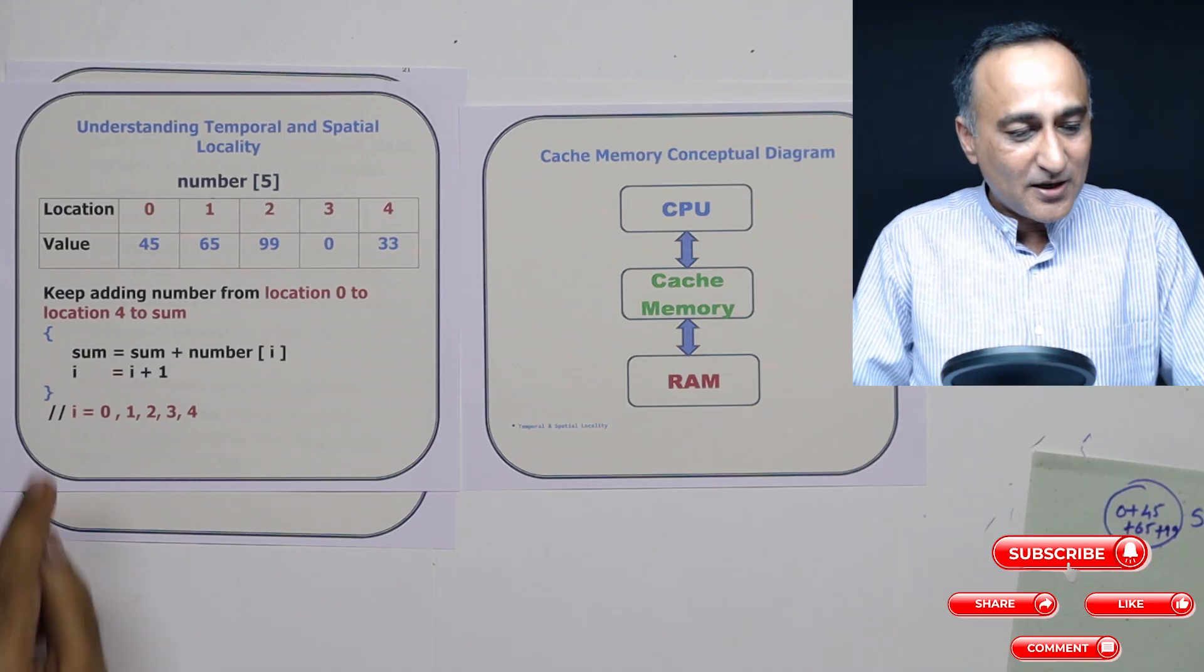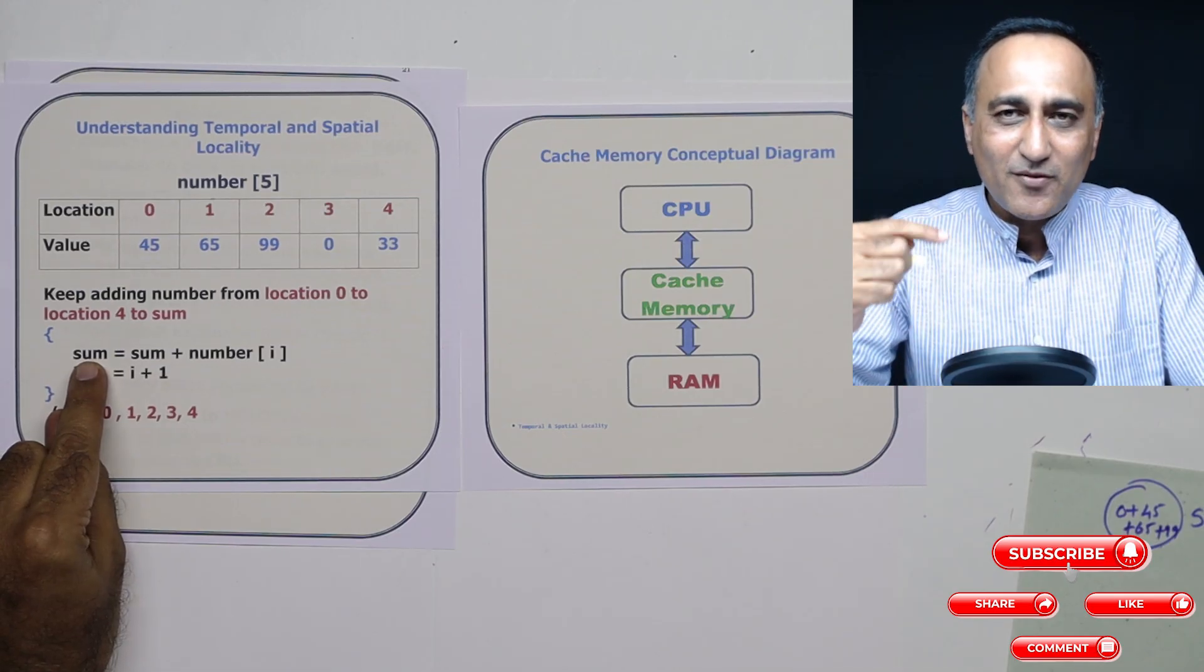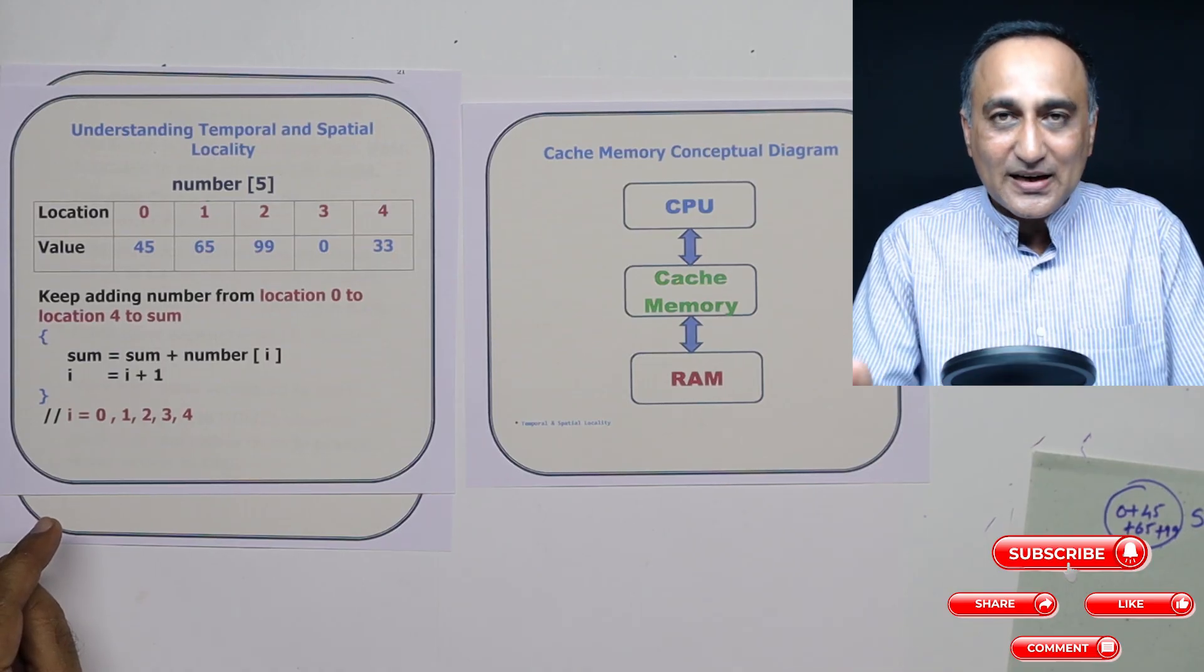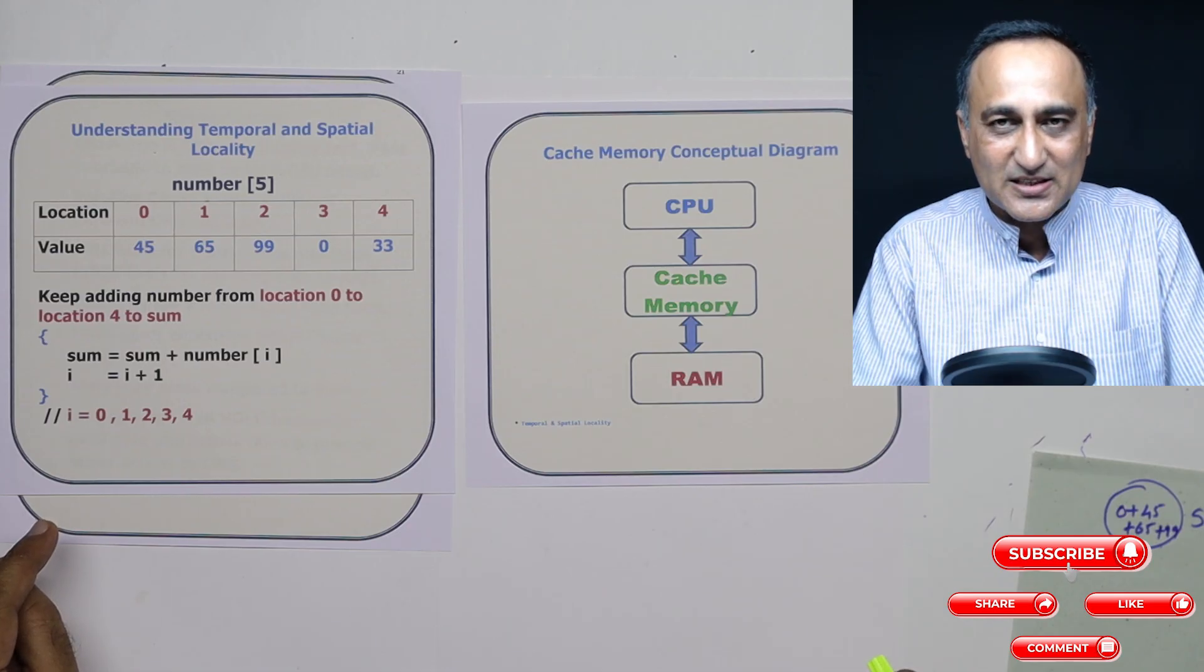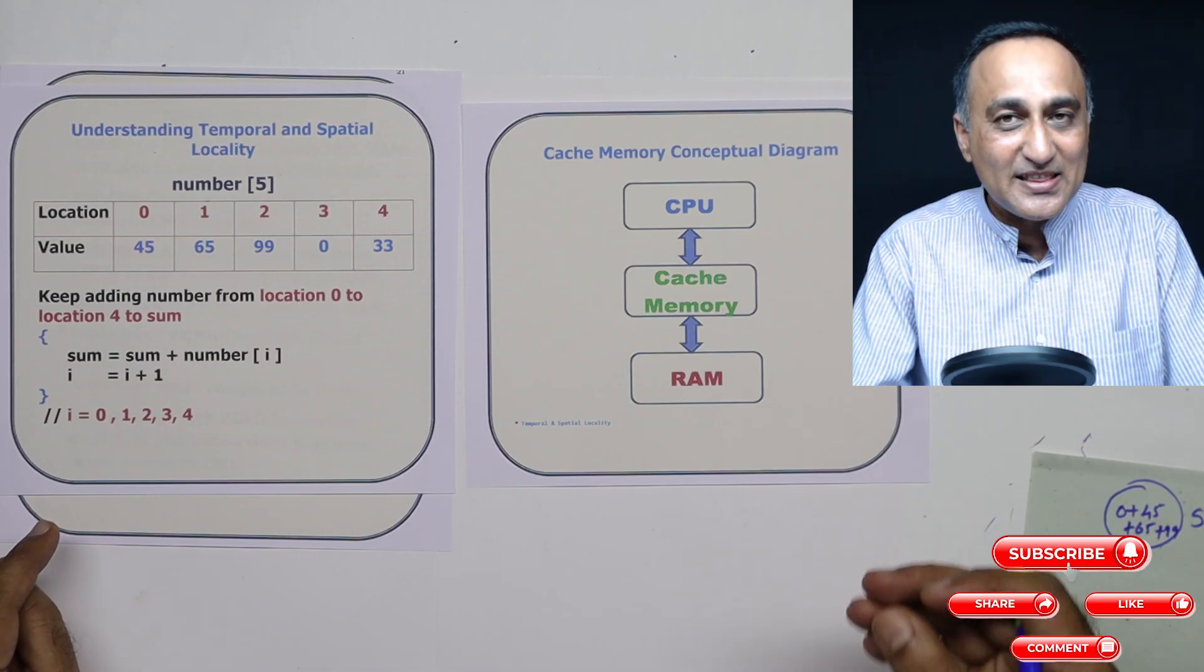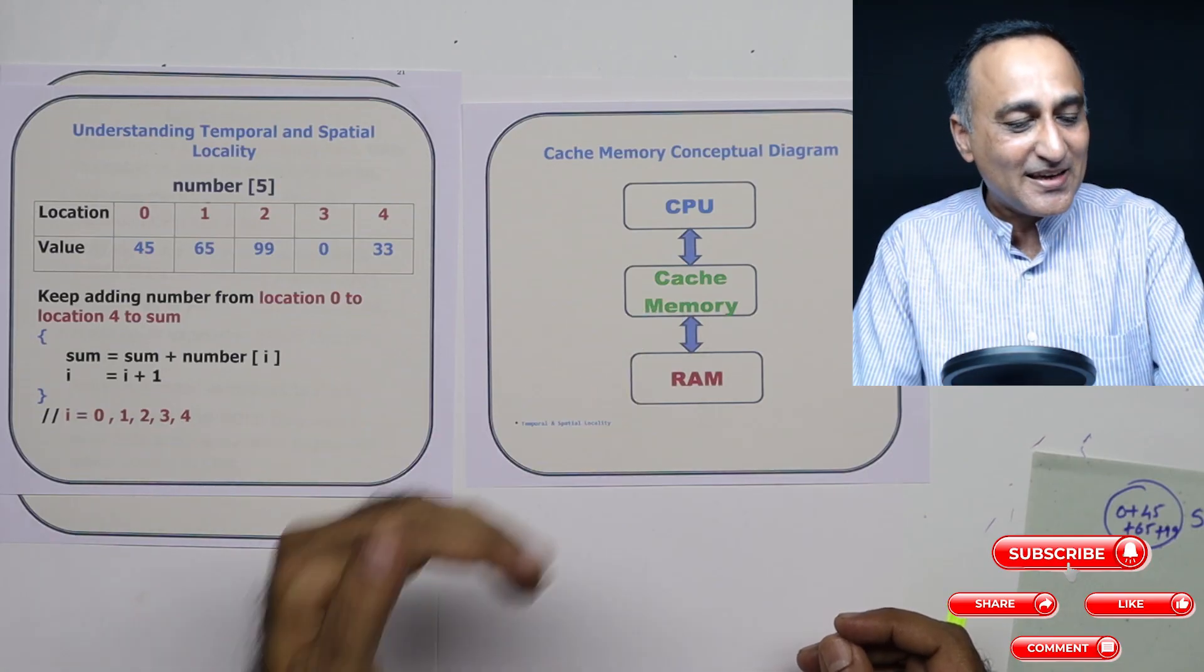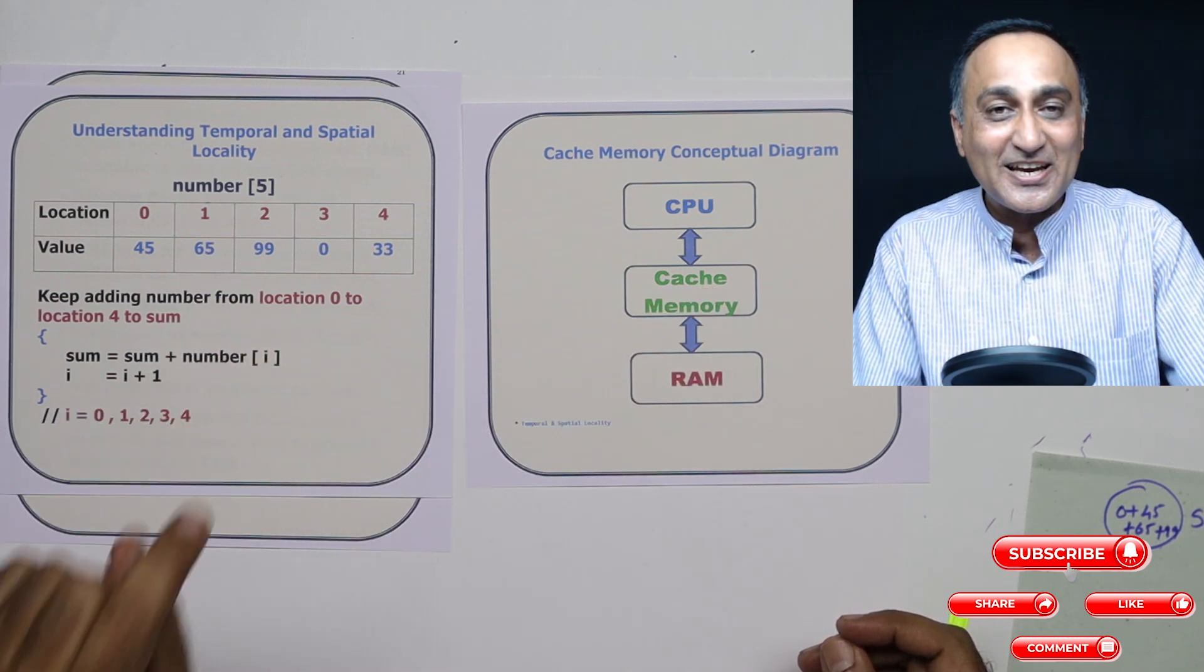If you look at it, sum is the variable or the data or memory location being used very frequently to add all these numbers. So what it's telling me is temporal locality means if a data or instruction has been used in the recent past, most recent past, it has a very good chance of being used again in the immediate future. So what it will do is instead of trying to get sum from RAM, it will keep it in cache memory so that the access is faster. Similarly, this number box of i also it will keep in the cache memory so that it can access it faster.